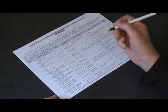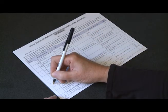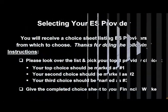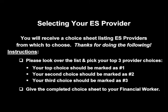Please look over the choice sheet and pick your top three provider choices. Mark your top choice as number one, your second choice as number two, and your third choice as number three. Please do not write X's or check marks — write numbers in order of preferred choice. Once you have completed the form, please give it to your financial worker.